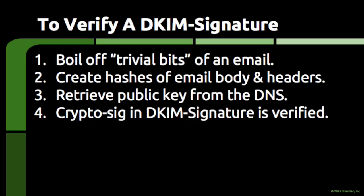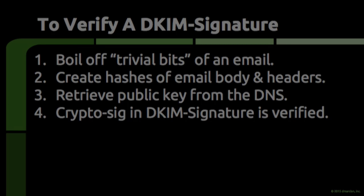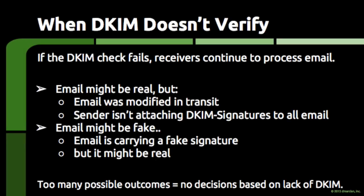The link that DKIM establishes between a domain and a piece of email is then used as input into things like anti-spam scanning and, more importantly, as input into DMARC-based checks. If the verification process wasn't successful, the receiving server continues processing the email as usual without this link, as any number of things could be going on. The email might be real but was modified too much in transit, causing the hashes to change, which in turn causes the cryptographic signature not to match, meaning the DKIM signature ends up not verifying. Or the email is fake and carrying a fake DKIM signature. It is difficult to attach meaning to the absence of the link that DKIM can provide.